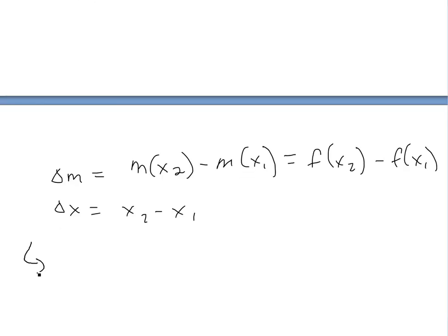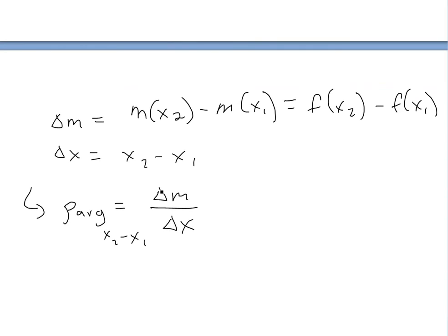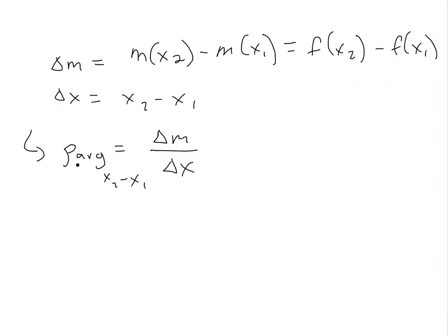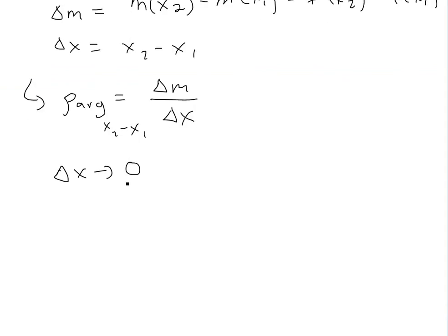So the linear density, or the average linear density, rho average, would just equal to delta m over delta x. It's average from x2 to x1, because it's going to be different for whatever section you're looking at. But if you make the difference of this delta x go to zero, so as it's approaching zero, this is the idea of a limit, then you're getting really small, then you will approach the actual density at that point.